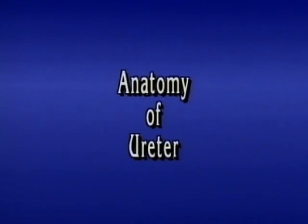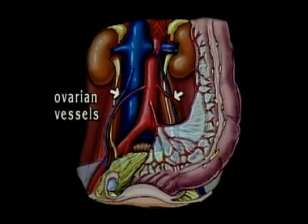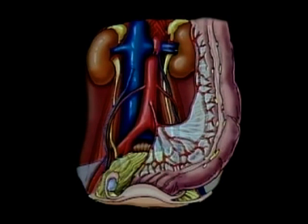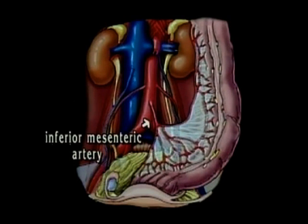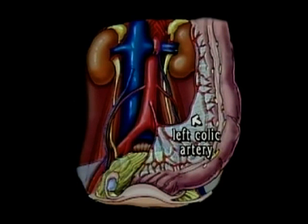The ureter is equally divided into abdominal and pelvic segments. In the abdomen, they run medial to the ovarian vessels. The left ureter is crossed anteriorly by the inferior mesenteric artery, the left colic artery, and the sigmoid colon.